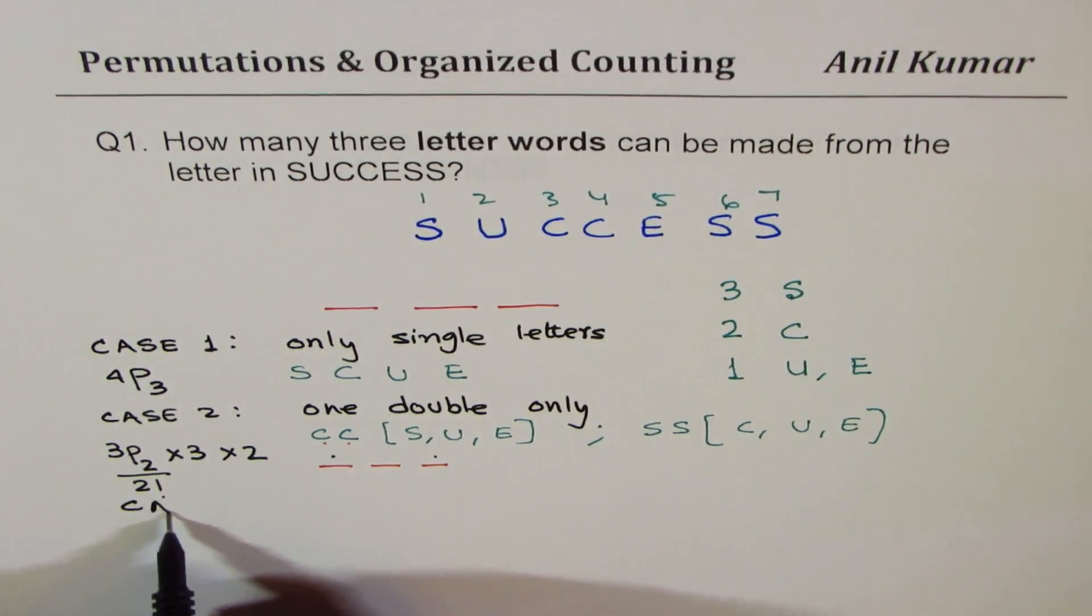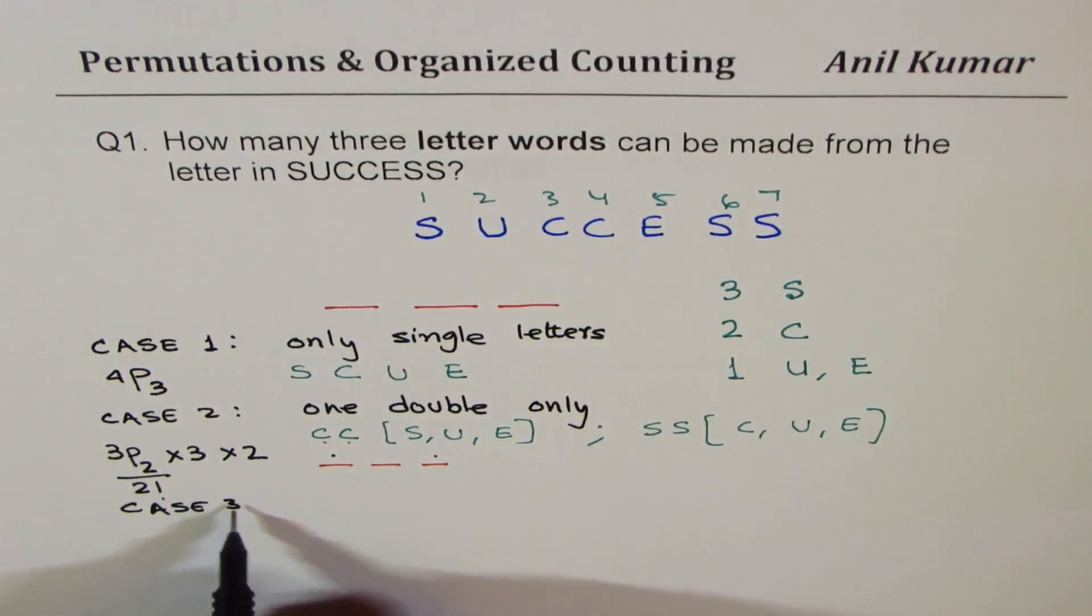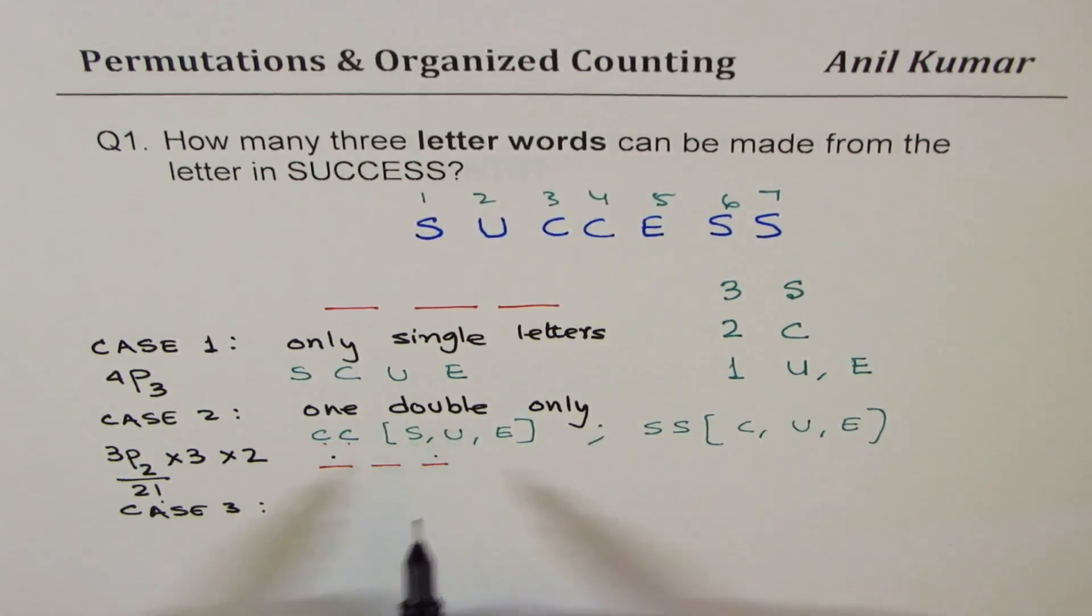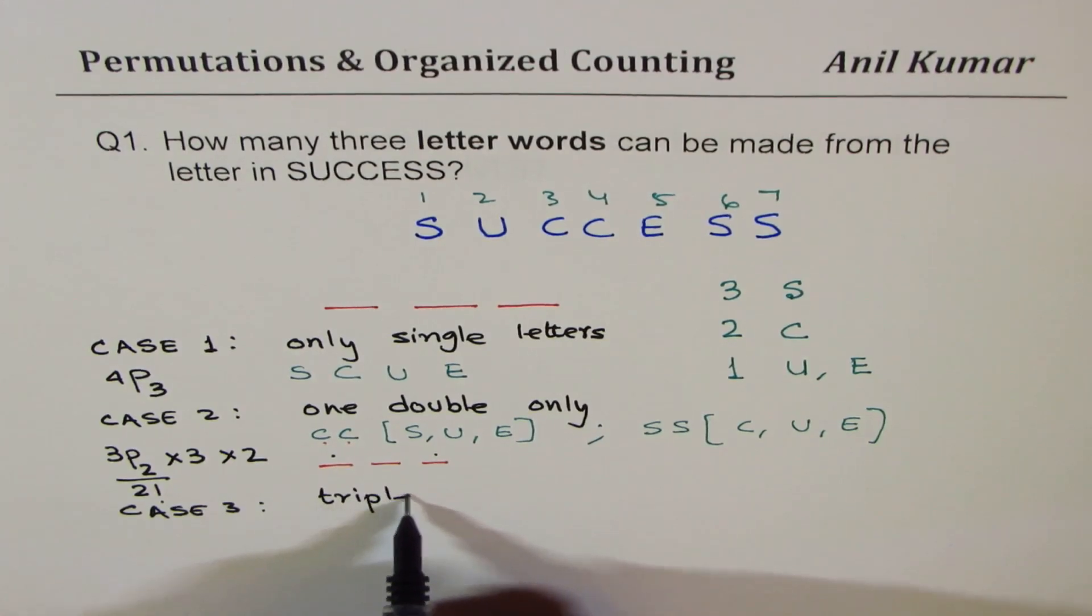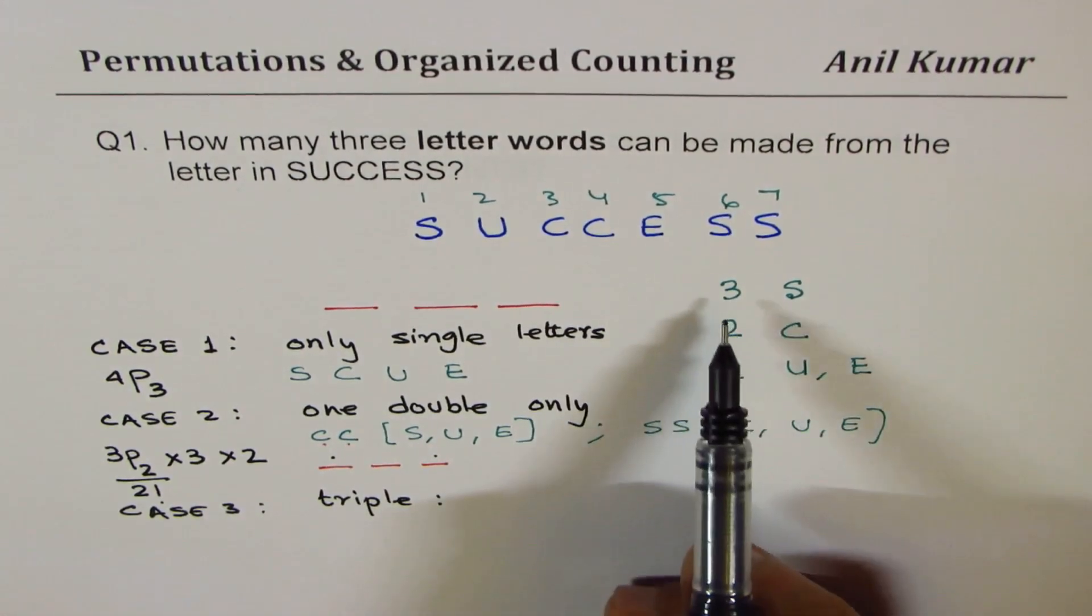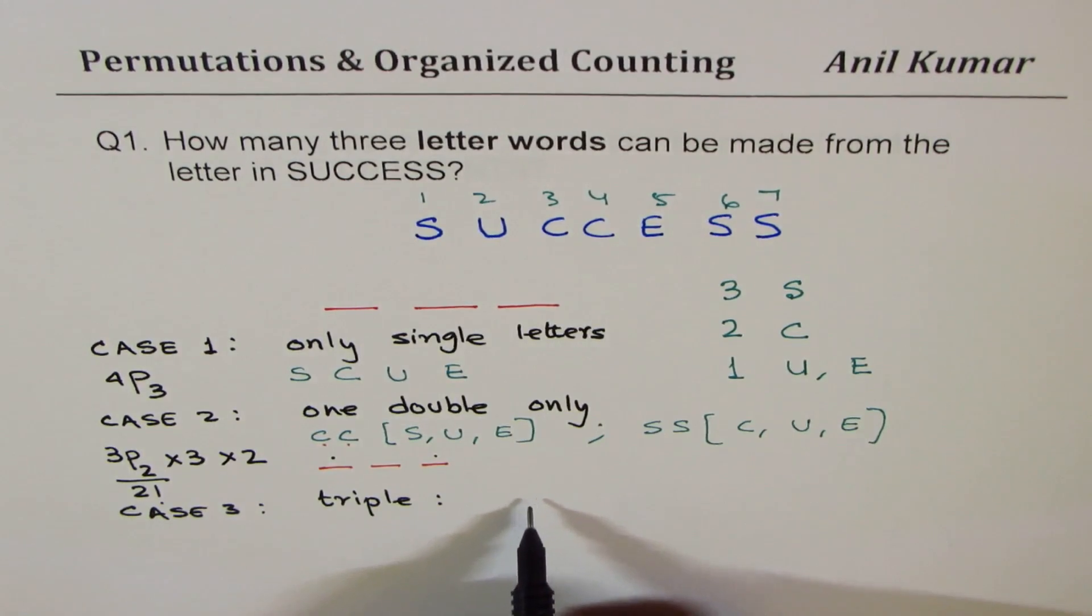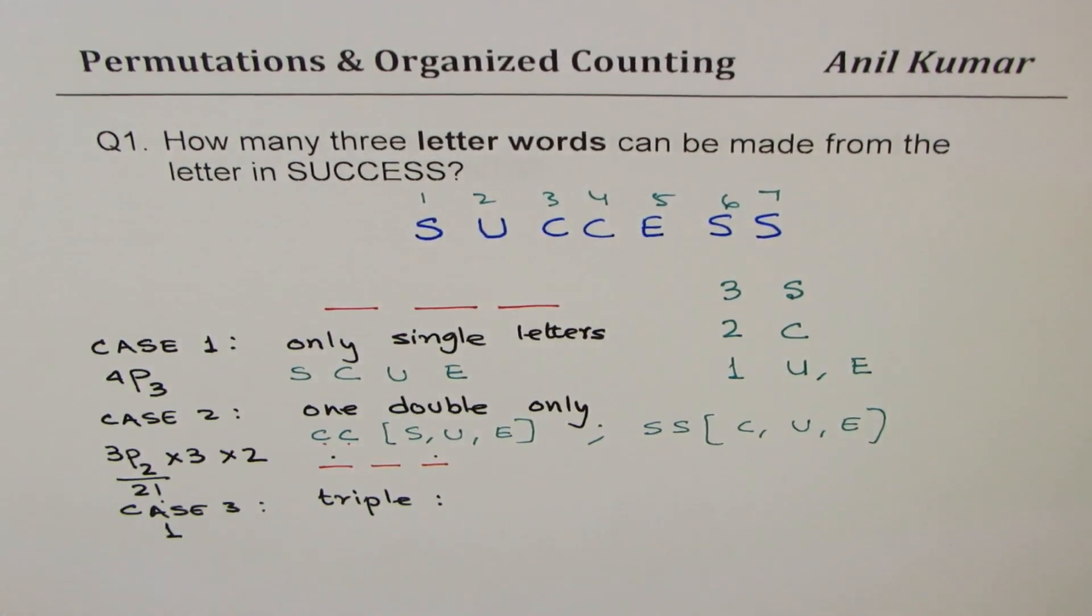Now let's talk about Case 3. So in Case 3, we have triple, because we cannot have two doubles, right? We are only limited with three positions, so we can have a triple. Triple combination is only one, right? Which is only one for us. Is it okay?